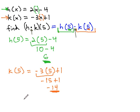So h(5) was 6 times k(5) which was -14, giving us 6 × (-14) = -84.